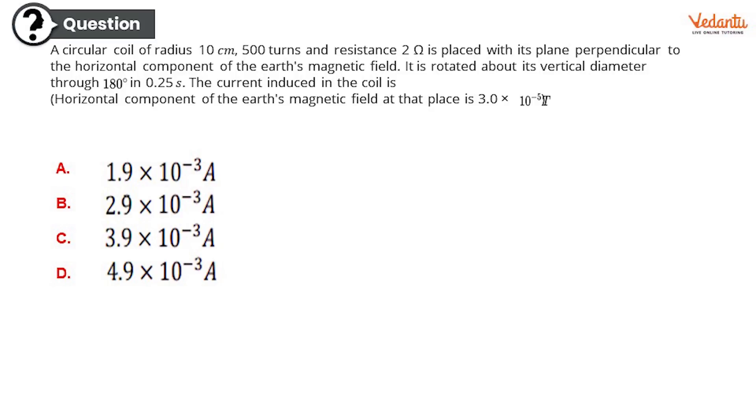The correct option is, or I should say the options are: Option A: 1.9 × 10⁻³ amperes. Option B: 2.9 × 10⁻³ amperes. Option C: 3.9 × 10⁻³ amperes. Or option D: 4.9 × 10⁻³ amperes.